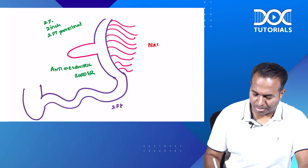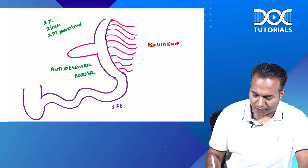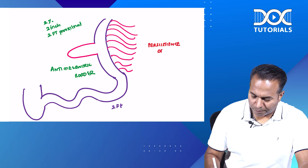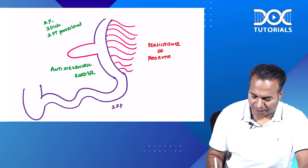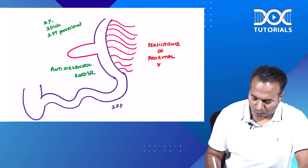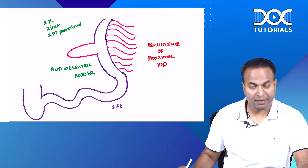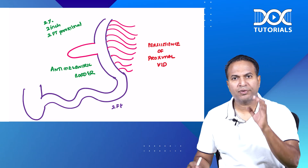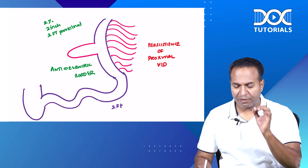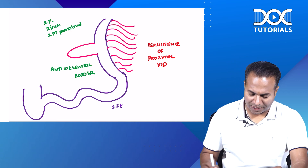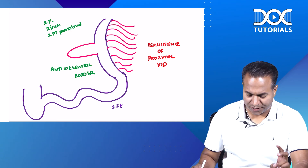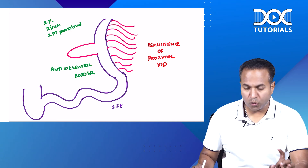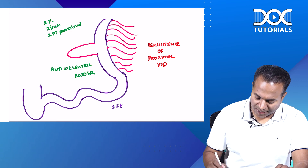Meckel's diverticulum is the persistence of the proximal vitalo-intestinal duct — please don't forget, not distal, proximal. So to recap: it is seen in two percent of individuals, two inches in length, two feet proximal to the ileocecal junction.